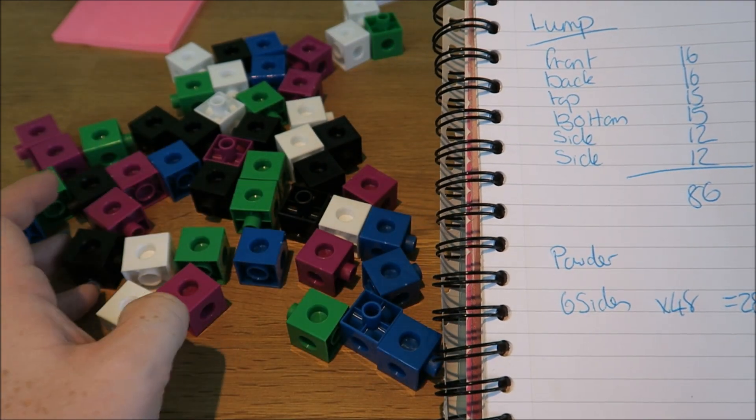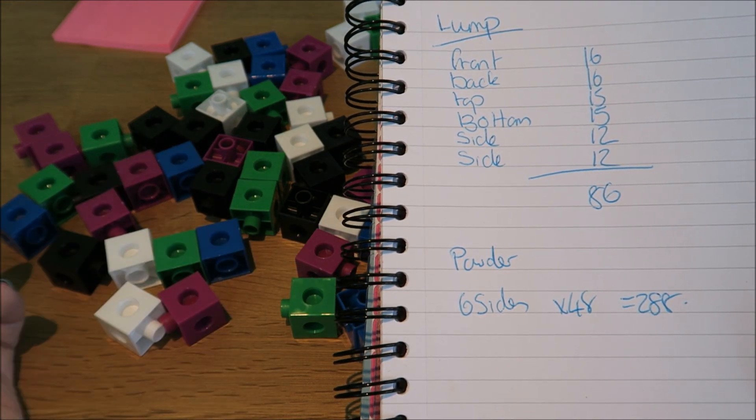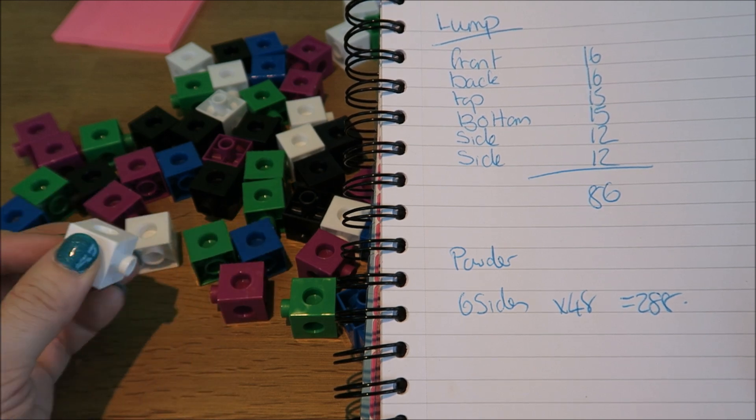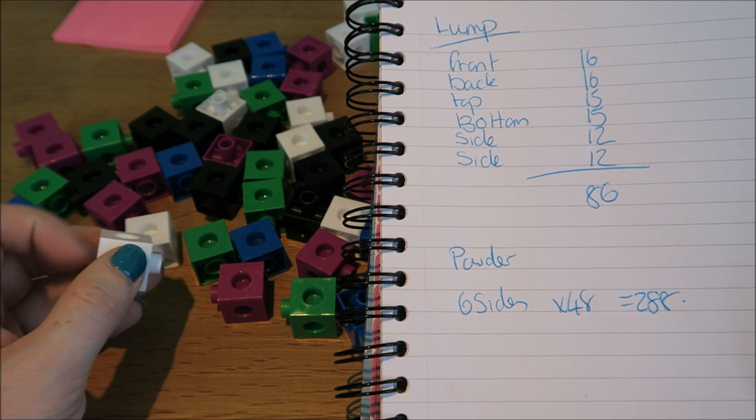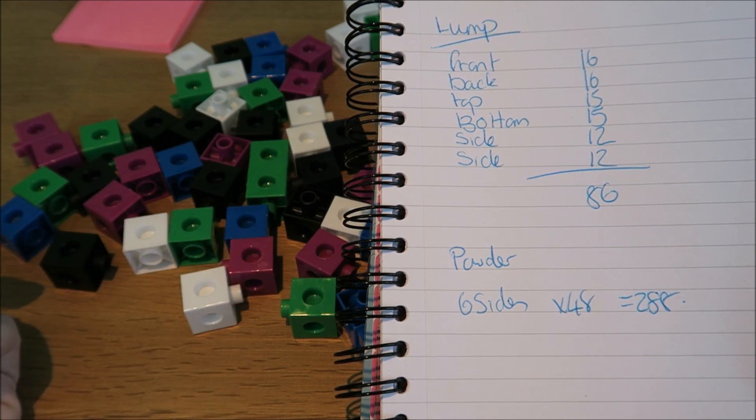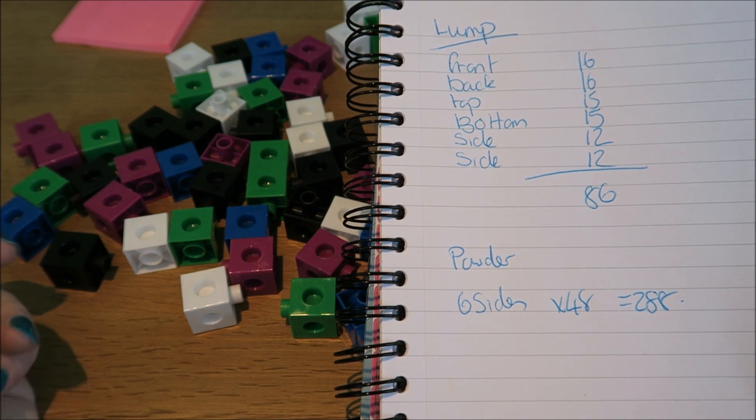Breaking it up into the individual lumps increases the surface area. So we have more space available to react because every single side, the ones on the inside, the ones on the outside are available to react, which means we had a total of 288 spaces available for a reaction to take place.